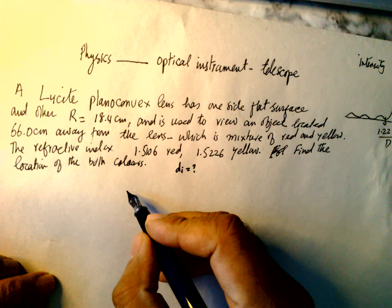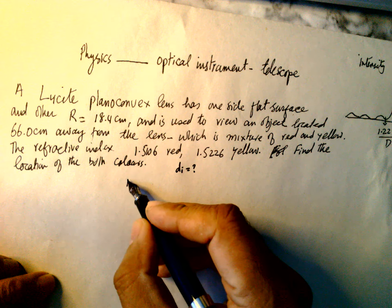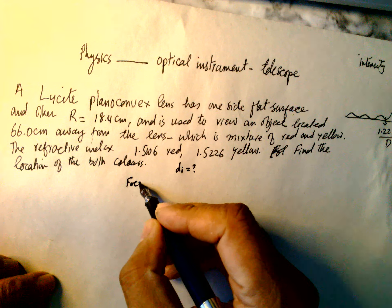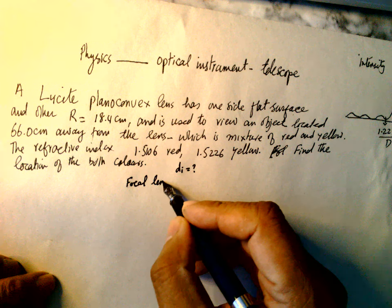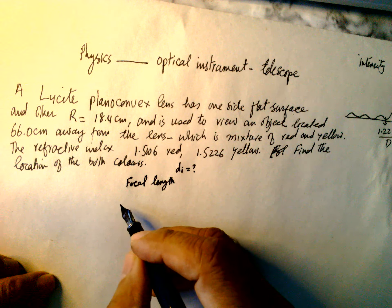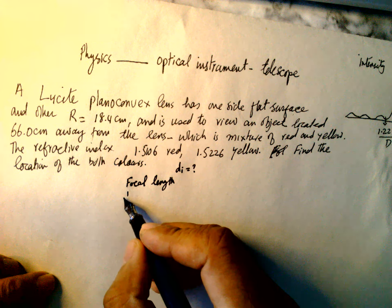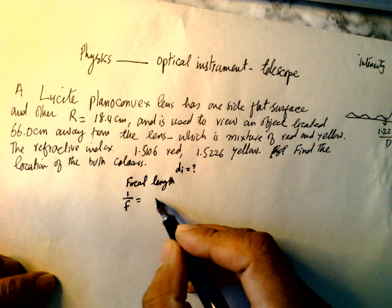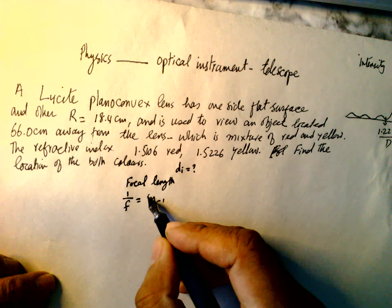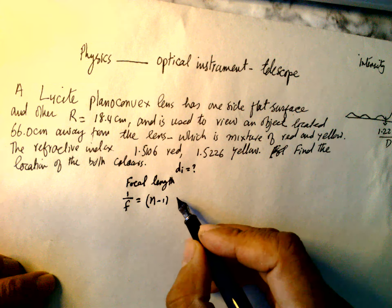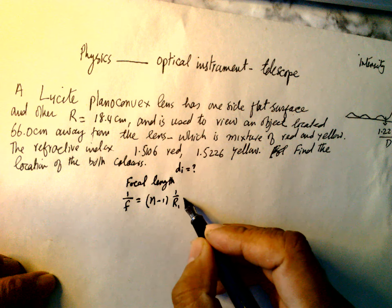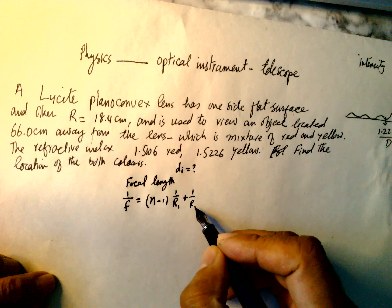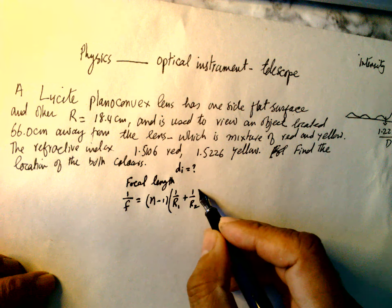So first of all we have to find the focal length. Focal length is given by 1/F = (N-1) × (1/R1 + 1/R2), where R1 is the radius of curvature of the lens surfaces.